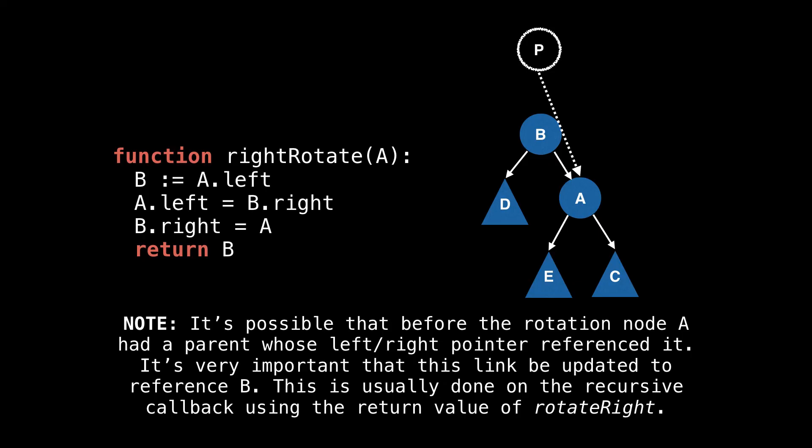This is problematic since B is A's successor after the rotation. So we change the link to now point to B. This step is usually done on the recursive callback using the return value of the right rotate function.